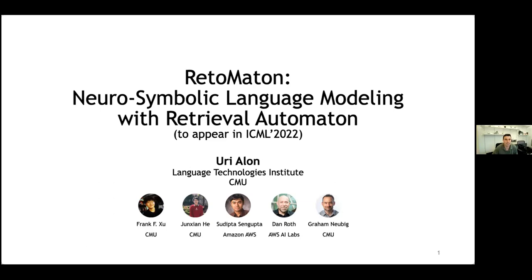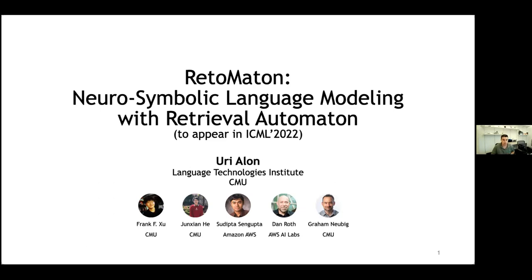Thanks everyone for coming. Thank you, Gail, for inviting me. Previously I was Gail's office mate at the Technion, and now I'm a postdoc at the Language Technologies Institute at Carnegie Mellon University. This work is called Neurosymbolic Language Modeling with Retrieval Automaton. It was just accepted to ICML. This is joint work with Frank and Junshan, who are PhD students here, Sudipta and Dan Roth from Amazon, and Graham Neubig, who is a professor here at LTI.